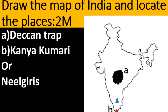Now the last question of FA 2 Model Paper 1 — draw the map of India and locate the places. You have two marks: one for drawing and half a mark per location. The Deccan Trap covers the southern part of Madhya Pradesh, Maharashtra, and the northern part of Karnataka and Telangana. Kanyakumari is located at the southern tip of mainland India — the cape of India. The Nilgiris is shown as a triangle; it is the meeting point of the Western Ghats and Eastern Ghats.